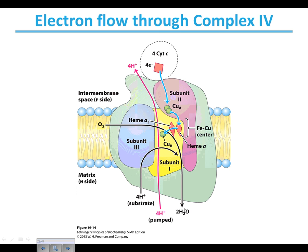Moving to the next picture, we can see that the heme and the copper have the electron. We're going to have to get a collection of four electrons. Then we get some oxygen moving in, which is going to pull in four protons. Electrons, oxygen, and protons work together to give us a product of water. This reaction where water is released also moves the four protons from the matrix to the intermembrane space.